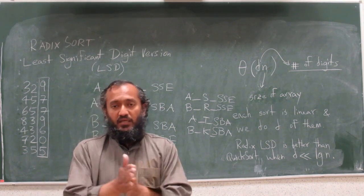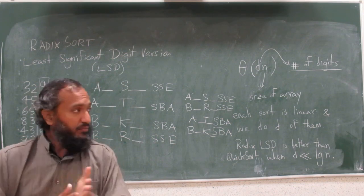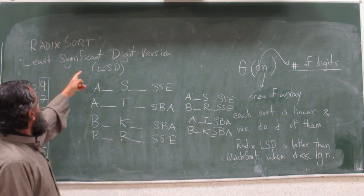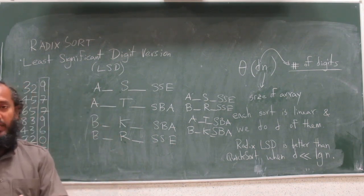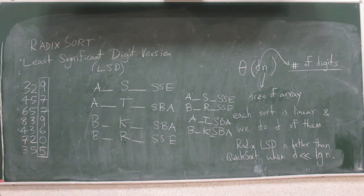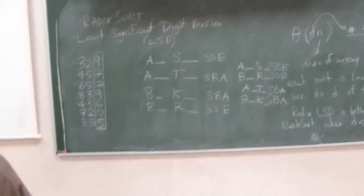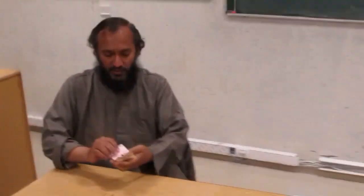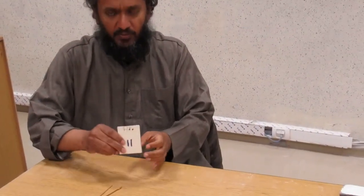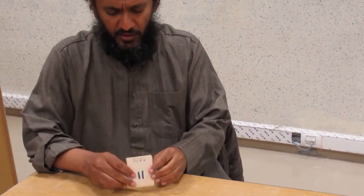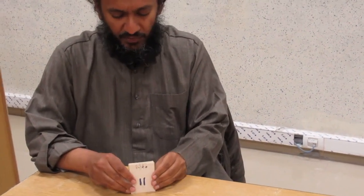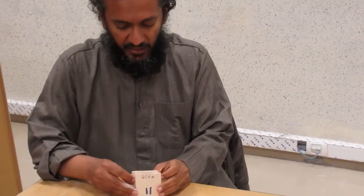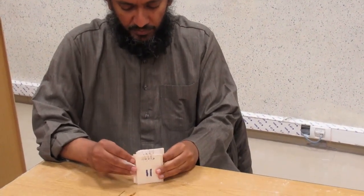Okay, now let's do a quick demonstration of the least significant bit version of radix sort using physical cards here. What I've done is I made here some cards and these are numbers from 0 to 15, maybe a couple of them are missing.